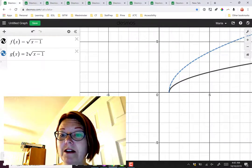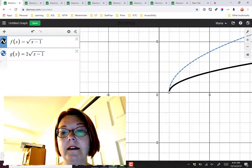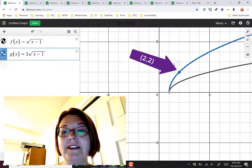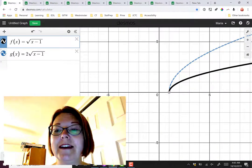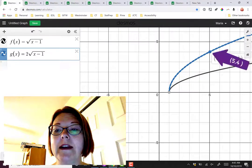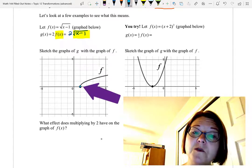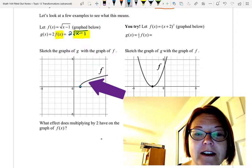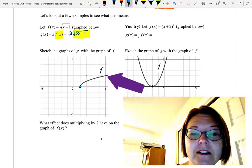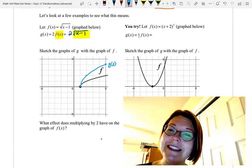So for example, on the graph of f(x), we have a point at 2, 1. On the graph of g(x), we have a point at 2, 2. On the graph of f(x), we have a point at 5, 2. And on the graph of g(x), we have a point at 5, 4. Notice that the endpoint is exactly the same because the y value of 0 times 2 is still 0. The y value of 1 times 2 is 2. The y value of 2 times 2 is 4. So here is our function g(x). It's a square root function with the same endpoint, but twice as high as f(x).